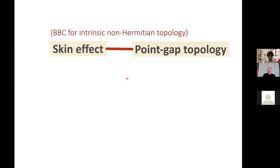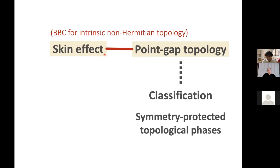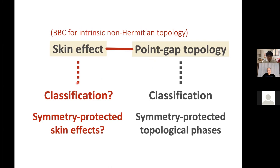Therefore, point gap topology — in other words, intrinsic non-Hermitian topology — leads to the non-Hermitian skin effect in the presence of a boundary. This can be considered as a new type of bulk-boundary correspondence for intrinsic non-Hermitian topology. Furthermore, point gap topology can be classified in terms of symmetry, and we have topological phases protected by symmetry. The natural question is: can we classify skin effects, or can we have symmetry-protected skin effects?